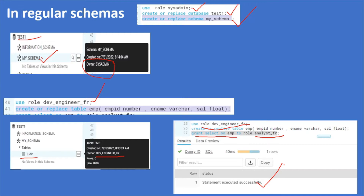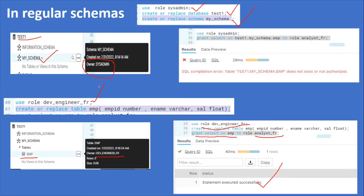Now let me try to give privileges to another role by using the schema owner. The schema owner is sysadmin. So when trying to use role sysadmin and grant select on the table in test1 schema to a role, we get a SQL compilation error: does not exist or not authorized.